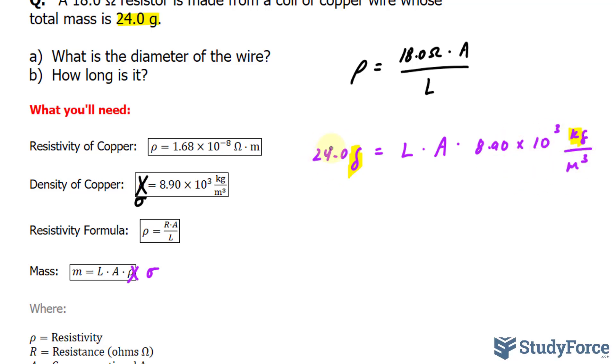I'll go ahead and convert 24.0 into kilograms so that it matches the density. And that's not hard to do. I divide this by 1000 and I end up with 0.0240. Notice that we still have three significant figures here. Significant figures are important in this question. And this is equal to L times A times 8.9 times 10 to the power of 3 kilograms per every 1 meter cubed.